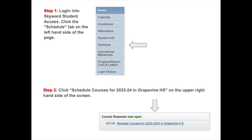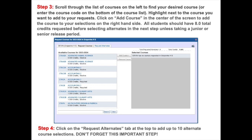To begin entering course requests into Skyward, students will log into Skyward Student Access and click the schedule tab on the left-hand side of the page. They will then click 'schedule courses for 2023-24 in Grapevine High School' in the upper right-hand side of the screen. On the left-hand side is a list of courses open to their grade level. Students can scroll through this list or enter the course code for the course they're interested in. Once they find the course they want, they will click next to the course and hit Add Course in the middle of the screen, which will populate on the right-hand side under the Selected Courses box.